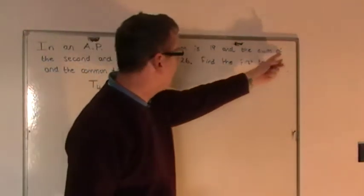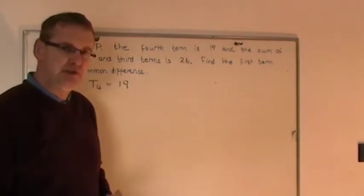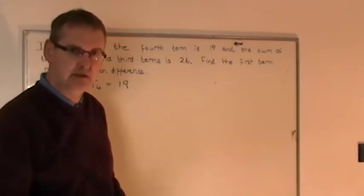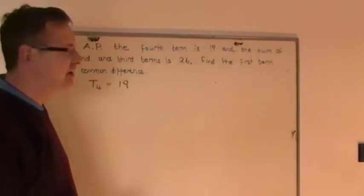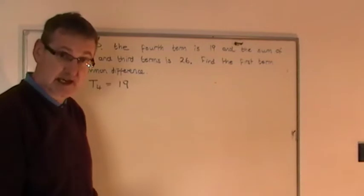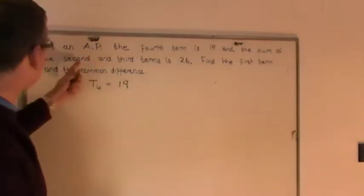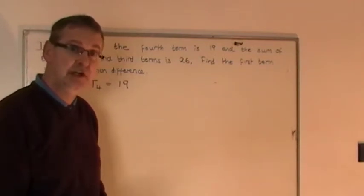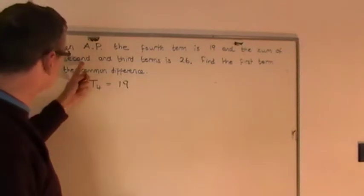The second statement says the sum of the second and third terms is 26. Now, just be careful here. As soon as you see the phrase the sum of, people's gut reaction is that you should be making use of the sum formula, SN equals N over 2, 2A plus N minus 1 D. In this particular example it would be a mistake because if you read the question carefully it doesn't say the sum of the first ten terms or the sum of the first five terms. It says the sum of the second and third terms only.